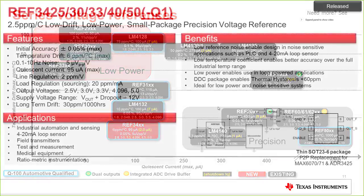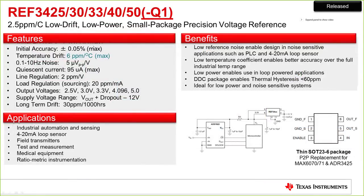Digging into the REF34xx in more detail: it offers a nice balance of power and performance with 0.05% initial accuracy — important if you're not calibrating your signal chain — 6 ppm/°C temperature drift, 5 µV peak-to-peak noise per volt in the 0.1–10 Hz region, and long-term drift of 30 ppm at 1,000 hours. We find this used as a great general-purpose device in loop-powered systems, and it's gaining traction in test and measurement, medical, factory automation, and field transmitter applications. It comes in an SOT-236 thin package.